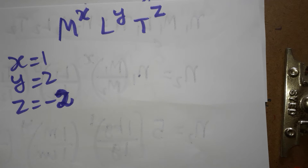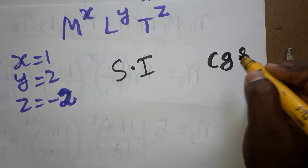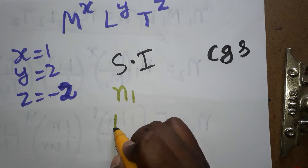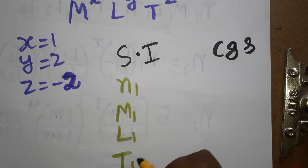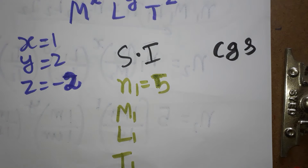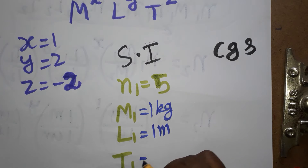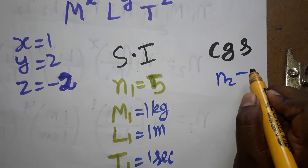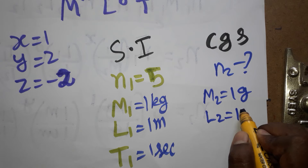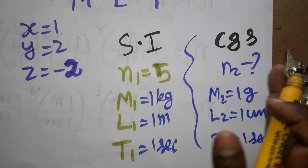Now we use dimensional analysis with two systems. One is the SI system, which gives us joules, and the other is the CGS system, which gives us ergs. So n1 with M1, L1, T1 corresponds to joules; n2 with M2, L2, T2 corresponds to ergs. For SI: M1=1 kg, L1=1 meter, T1=1 second. For CGS: M2=1 gram, L2=1 centimeter, T2=1 second.